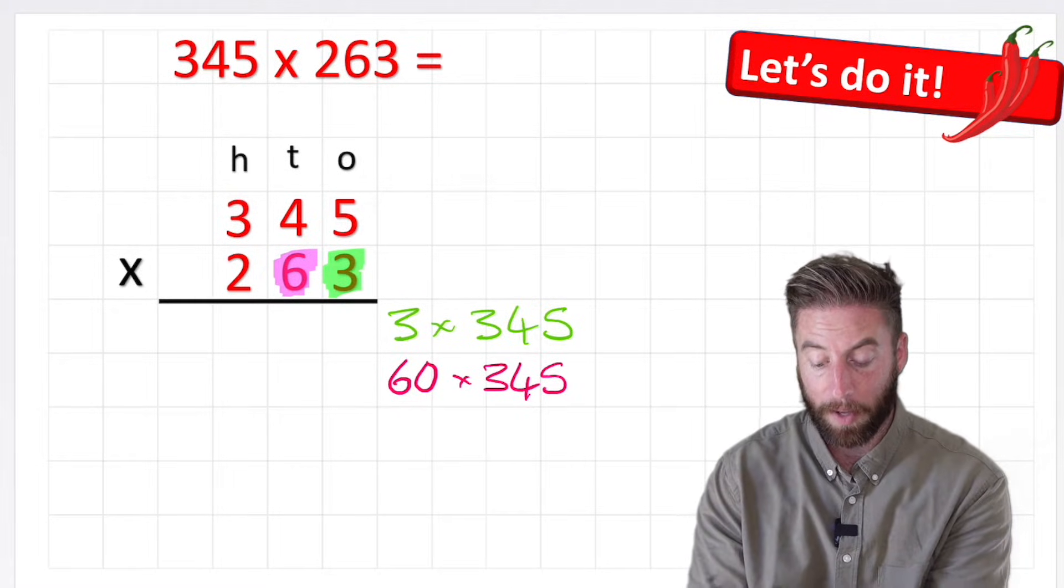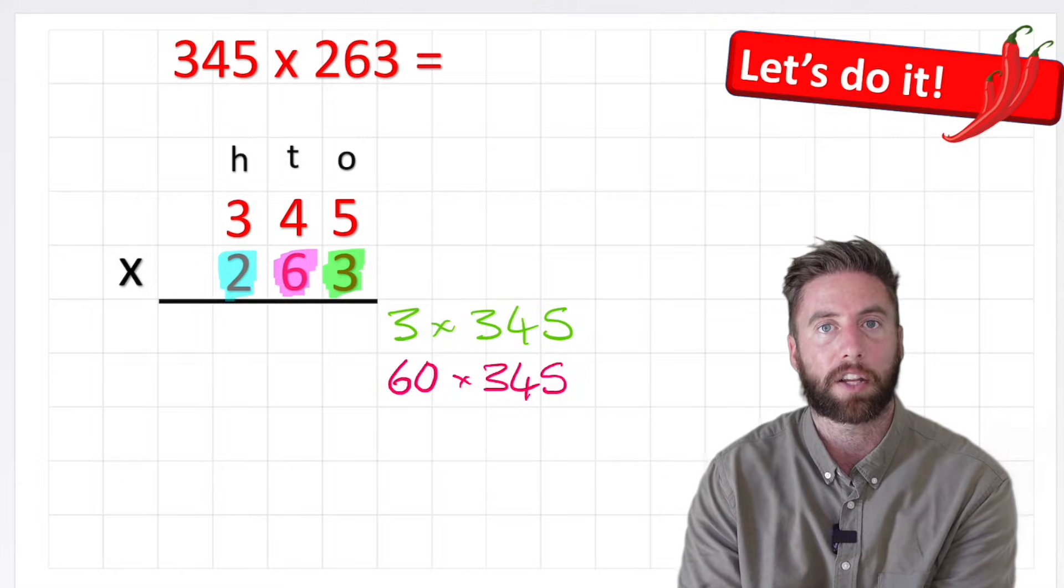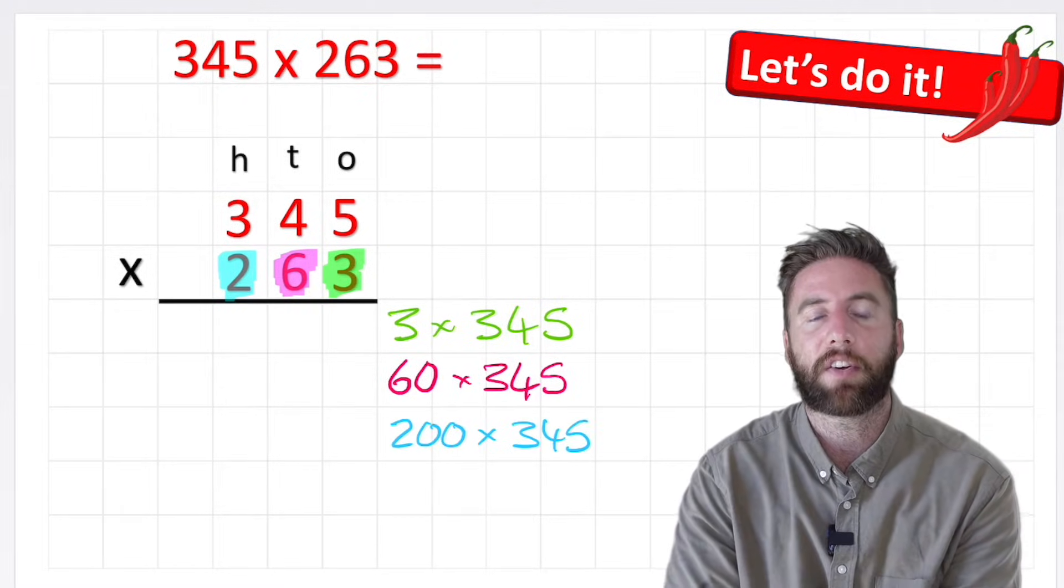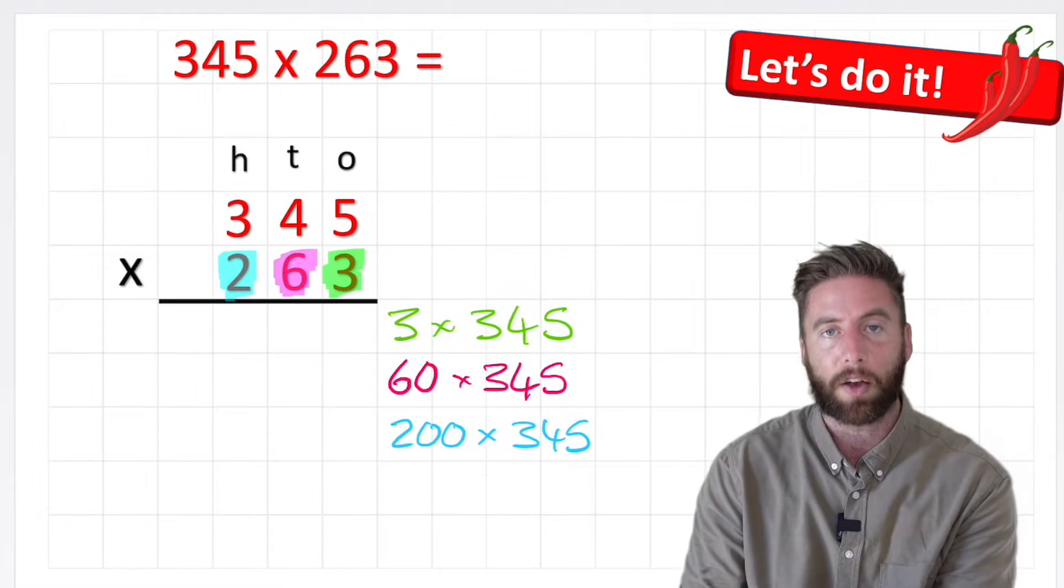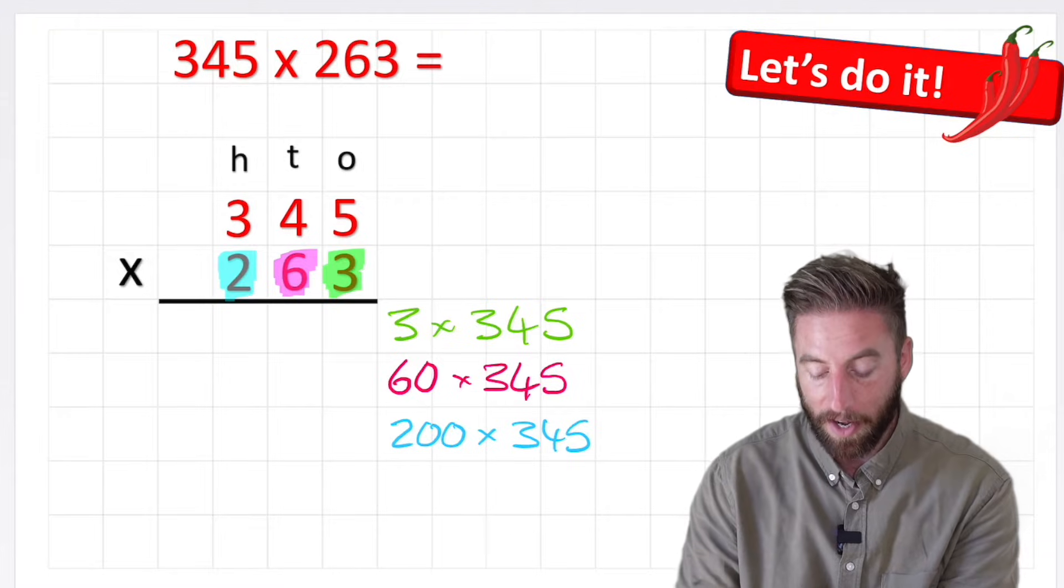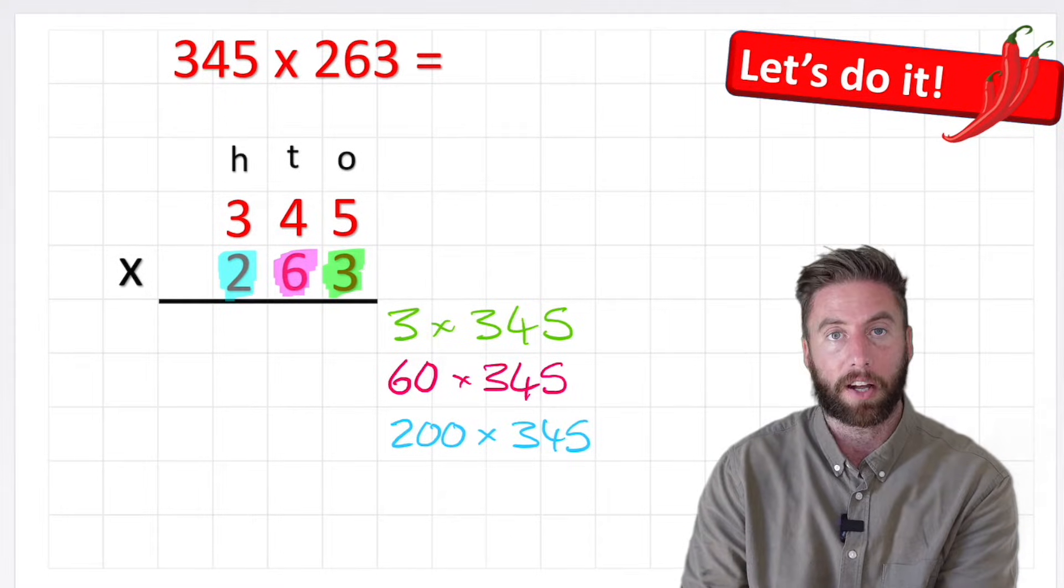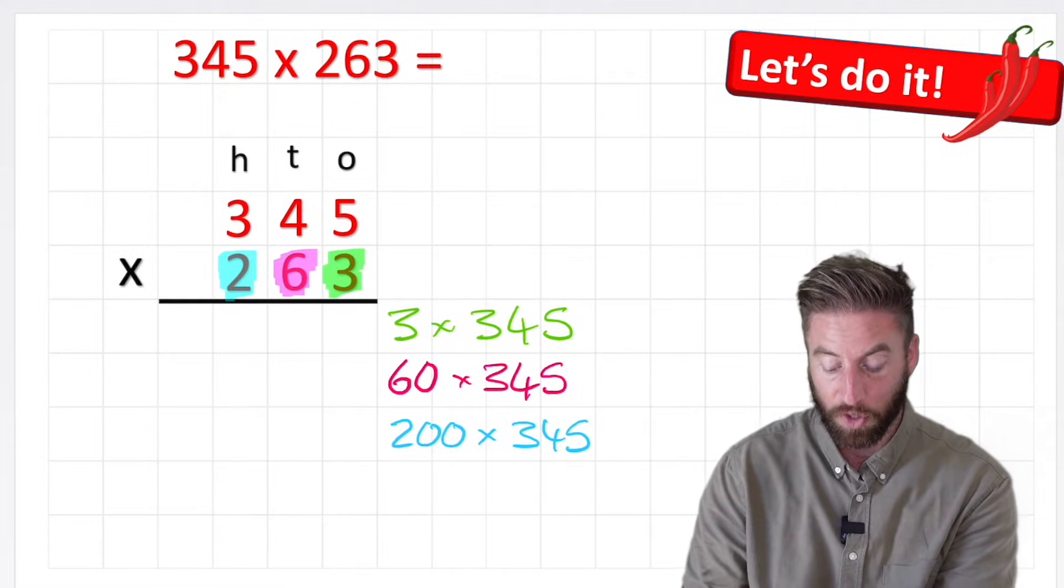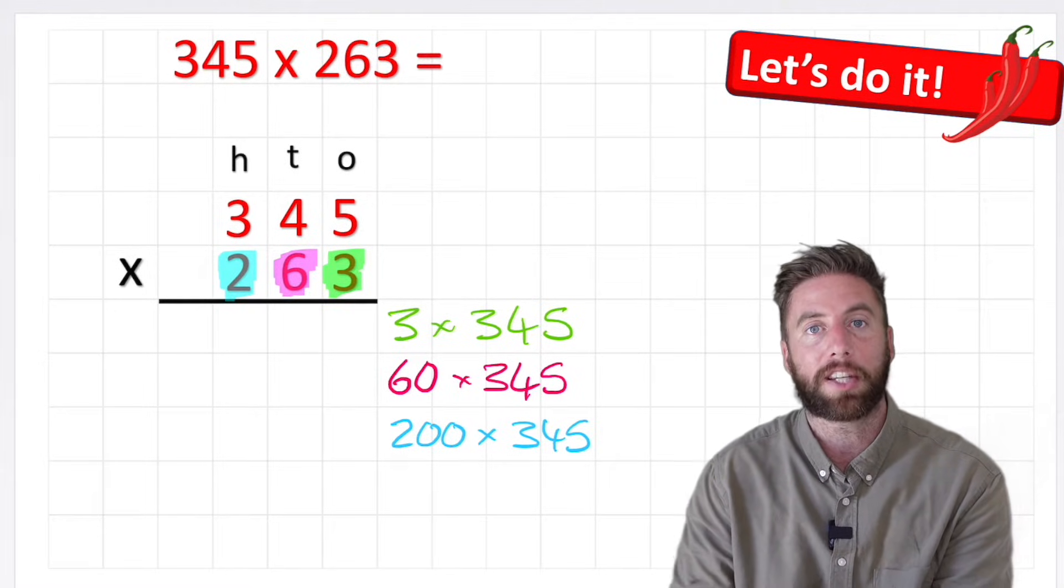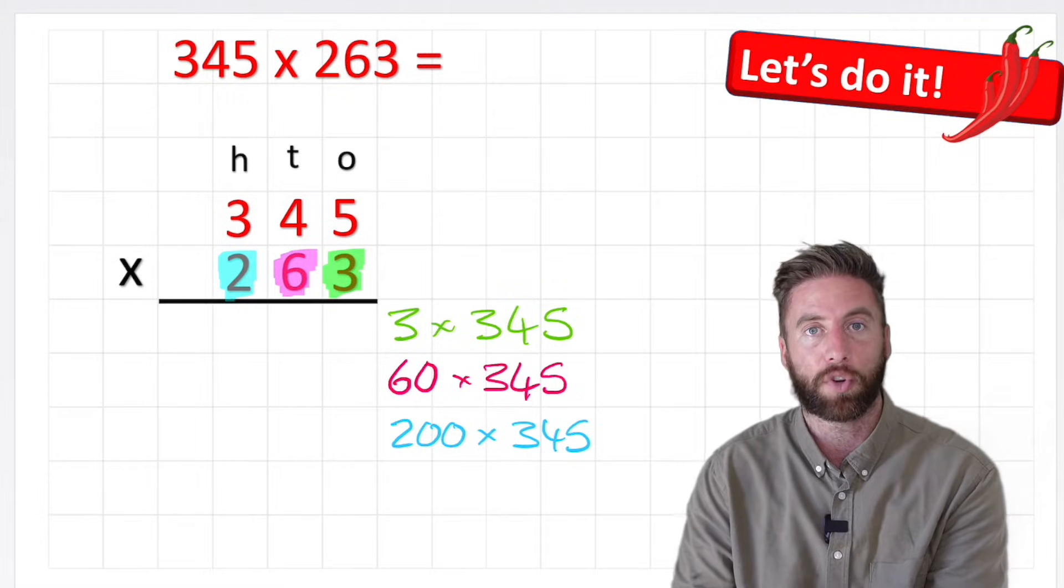And then finally, I'm going to be multiplying this 2, which actually holds the value of 200, by the 345. So this is a very sensible first step to write out your partitioned question so you know exactly what you're doing in each of the stages, because once we add our 3 times 345 and our 60 times 345 and our 200 by 345, we're going to get our total answer because we've just partitioned the 263 into the 3, the 60, and the 200.